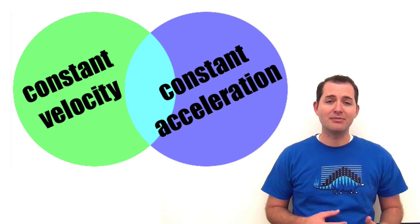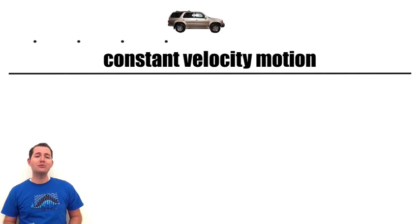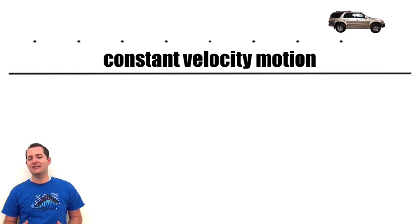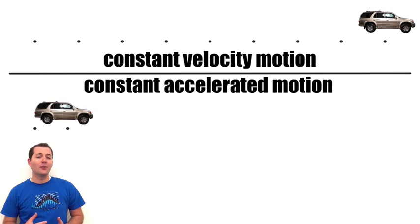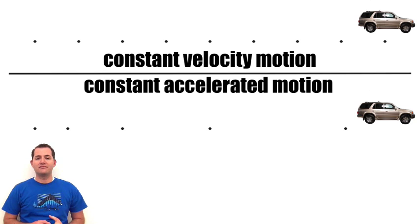We're going to start with an example of a vehicle that has an oil leak. Every second, one drop of oil drops out of that car, leaving behind a dot diagram that shows where the car was at each second. As we look at the dot diagram of constant velocity motion, we can see that the object moved the same distance every second. But when we compare this to motion with a constant acceleration, the object moves more and more every second, because its velocity is increasing each second.